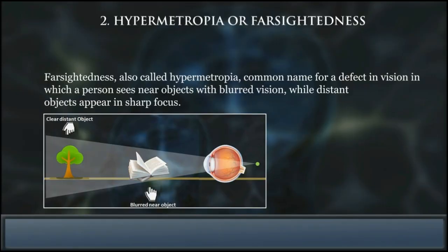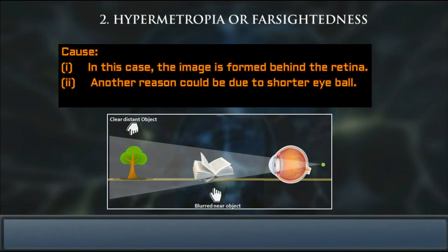A concave lens diverges the rays of light entering the eye in such a way that the rays focus on the retina. Hypermetropia, or farsightedness, also called hypermetropia, is a common name for the defect in vision in which a person sees near objects with blurred vision while distant objects appear in sharp focus.